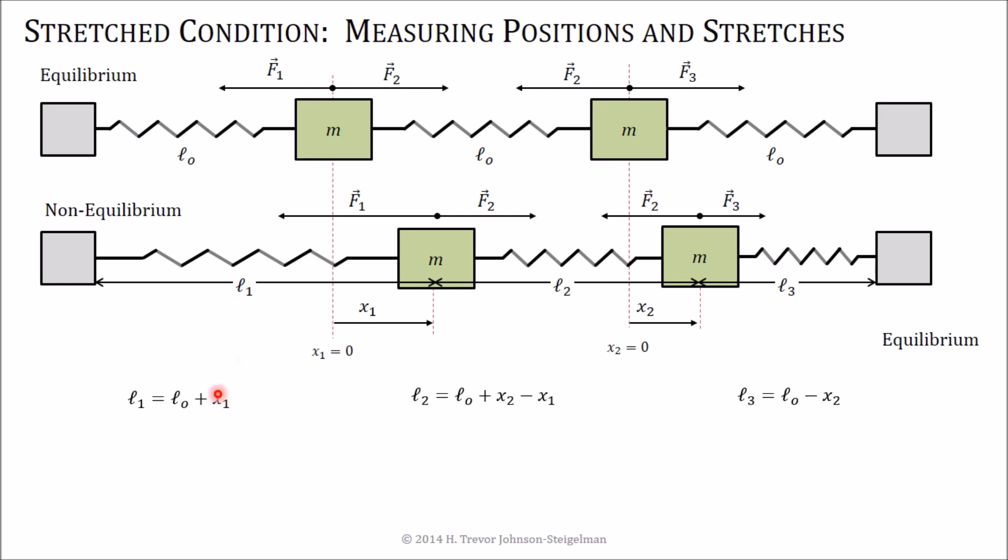If we take a look at it, L1 is the original unstretched length plus the position of x1. Now, x1 can pick up a plus sign or a minus sign depending on which direction we go. As it's shown, x1 is a positive number. If the first mass is going to the other direction, x1 would go in as negative. And that's going to be true for x1 and x2 throughout all of these. They're going to pick up their sign from where they are on either side of x2 equals zero or x1 is equal to zero.